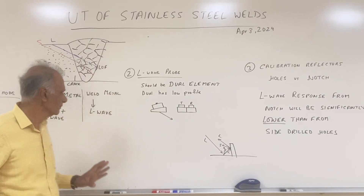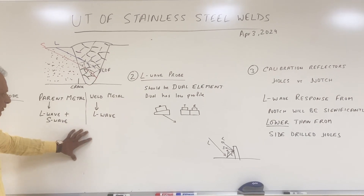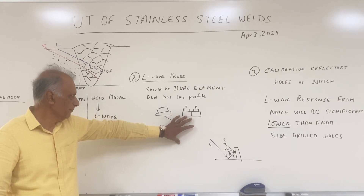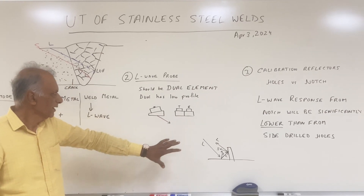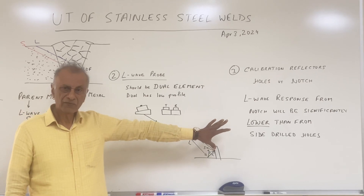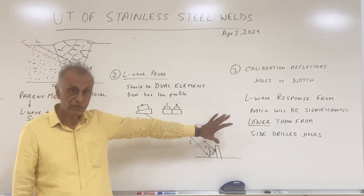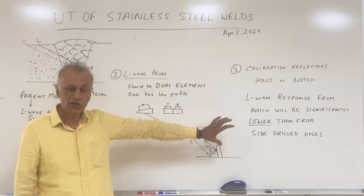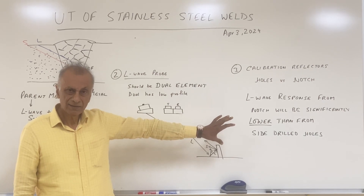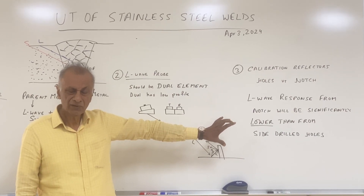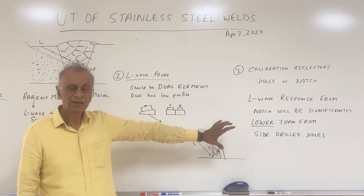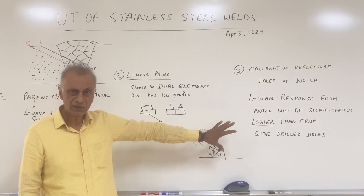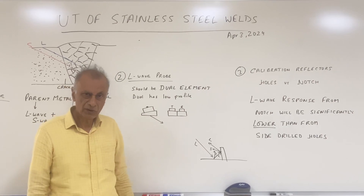In conclusion, I covered the wave modes, the use of the dual element L-wave probe, and as far as the calibration reflector — I pointed out the difference between the hole and the notch, noting that the reflection from the notch will be significantly lower than from the calibration side-drilled holes. Thank you so much.